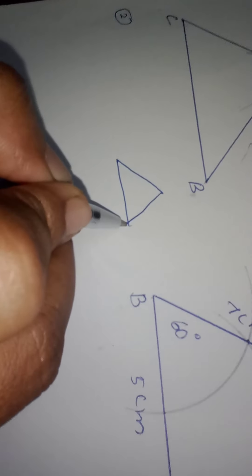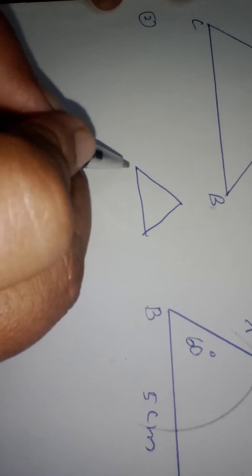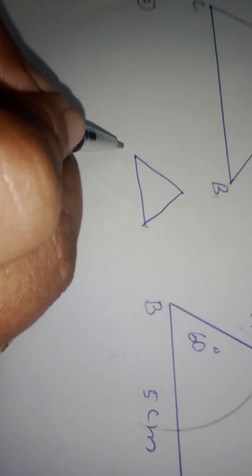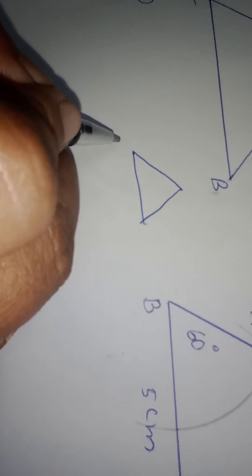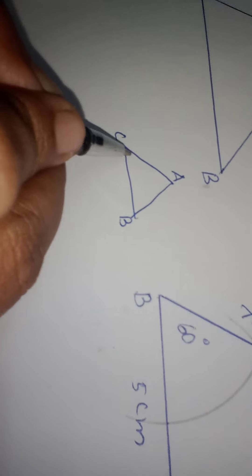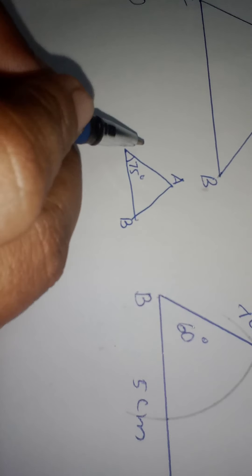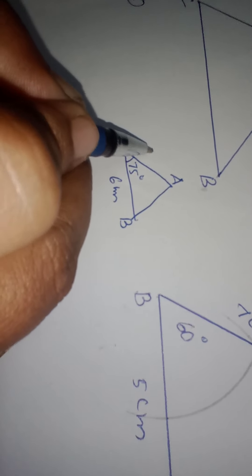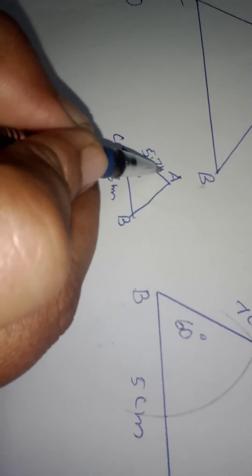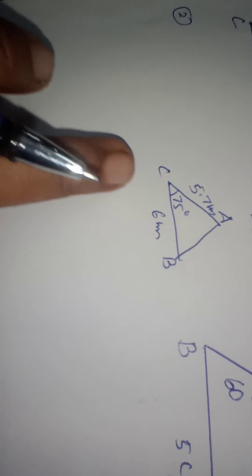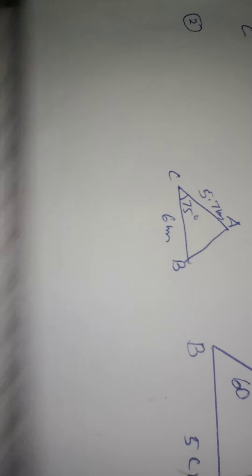I will show one more question from this section. For the second question: BC equals 6 cm, AC equals 5.7 cm, and angle ACB equals 75 degrees. Since this is 75 degrees and the angle is at C, write ACB. BC is 6 cm and AC is 5.7 cm. For 75 degrees, you can use the protractor.